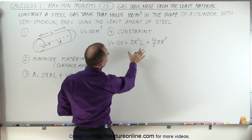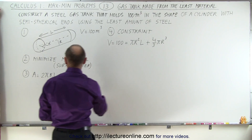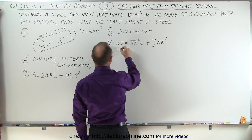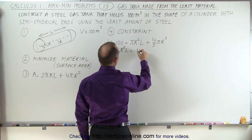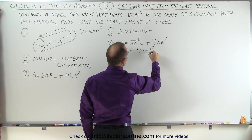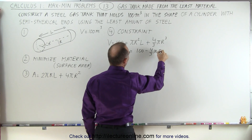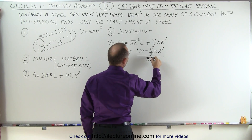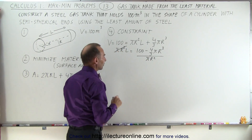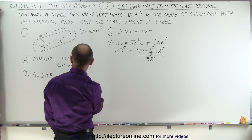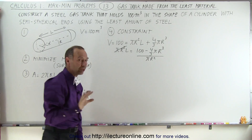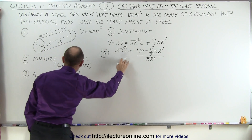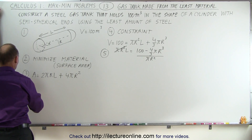What we need to do here is solve this equation for l so we can substitute it in. We can say that πr²l equals 100 minus (4/3)πr³, and then divide both sides by πr². We now have an equation for the length. For step five, we're going to use the constraint equation to eliminate one of our variables.